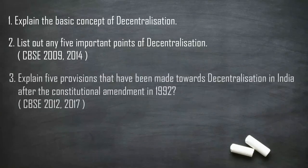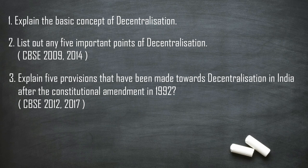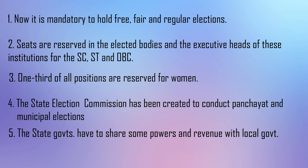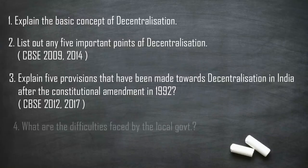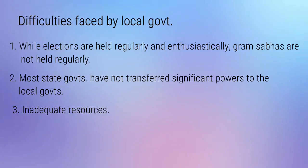Third question: explain five provisions made towards decentralization in India after the constitutional amendment in 1992. First, it is mandatory to hold free and fair elections. Second, seats are reserved for scheduled caste, scheduled tribe and other backward classes. Third, one third of all positions are reserved for women. Fourth, the state election commission has been created to conduct panchayat and municipal elections. Fifth, the state government has to share some powers and revenue with local government. Difficulties faced by local government: gram sabhas are not held regularly; most state governments have not transferred significant powers; and there are inadequate resources.